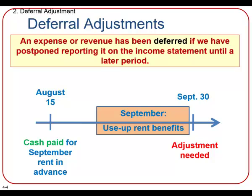We pay in advance, we keep it on our balance sheet because it's still our money, and we put it in prepaid rent. In this case, rent is paid on August 15th for September's rent — we're paying for this rent in the future. During the actual month of September, that rent benefit is actually used up. So at the end of September, on September 30th, when that one month of the prepaid rent has been used up, we make an adjustment. This deferral adjustment involves reducing the asset prepaid rent, recognizing that it's not a prepaid anymore, and then we recognize the actual expense on the income statement at that time.